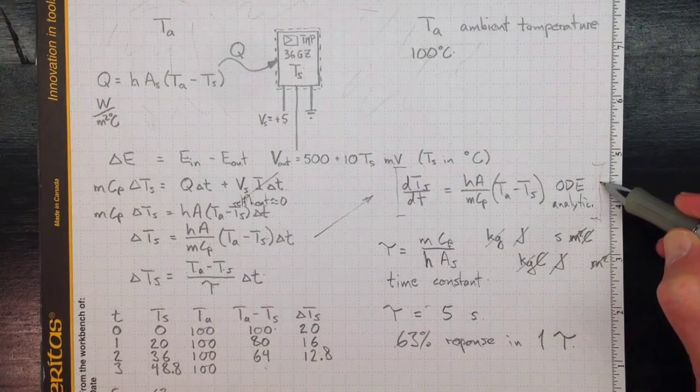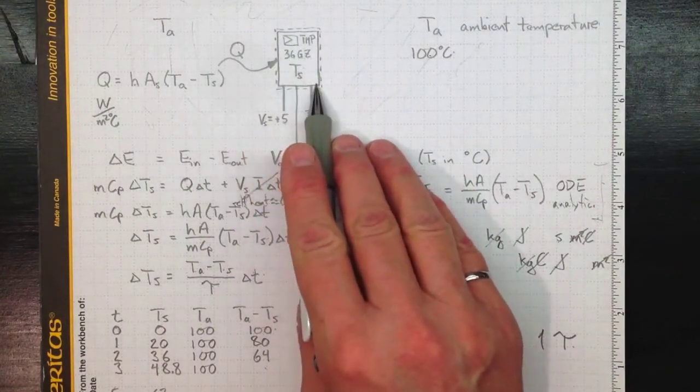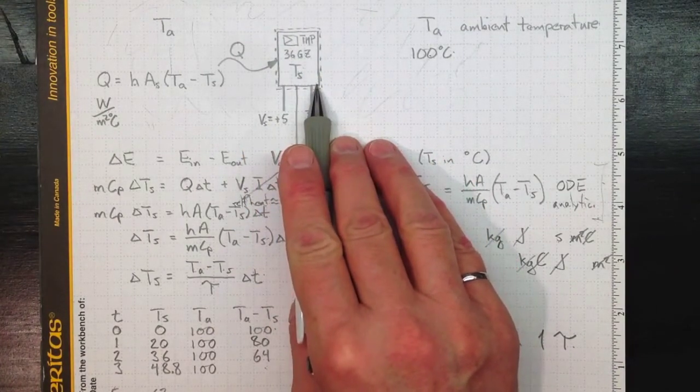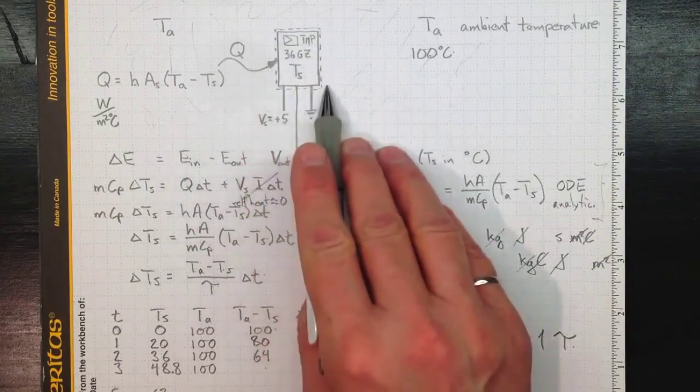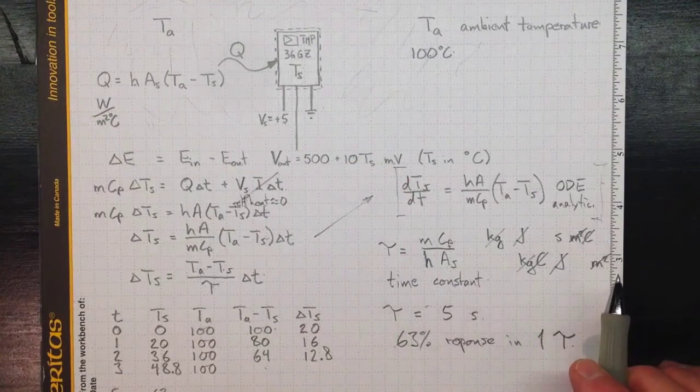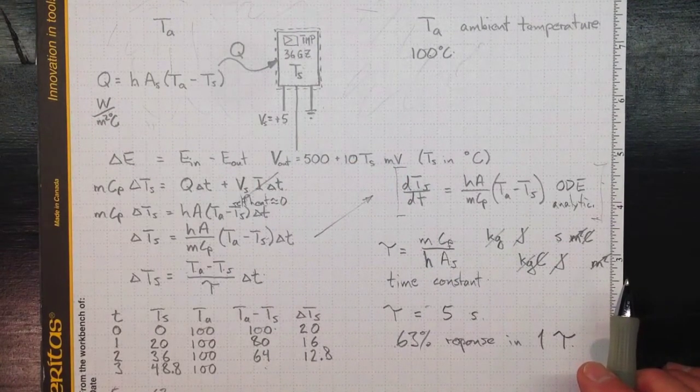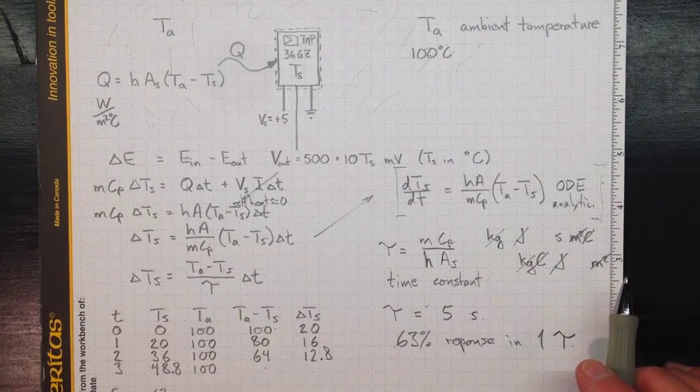This kind of thermal response applies no matter what system you're looking at, whether this is a TMP-36 or a thermocouple, or even applying the same control mass analysis to the bed of a 3D printer that we're heating up in order to keep the plastic that we're printing from separating from the bed.